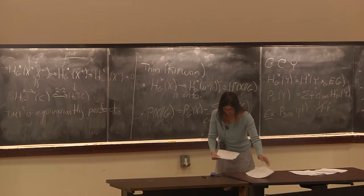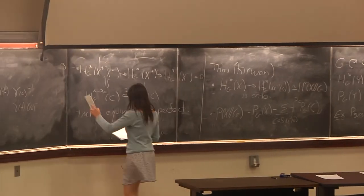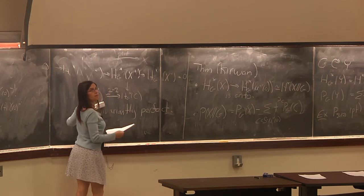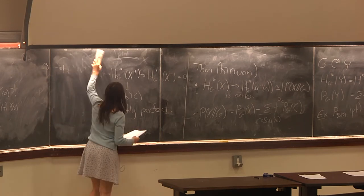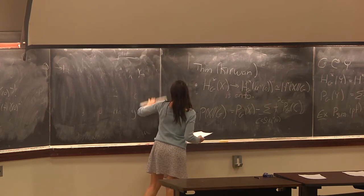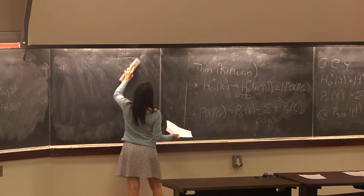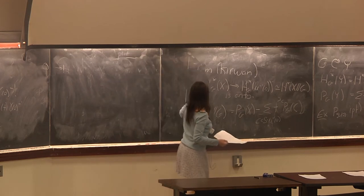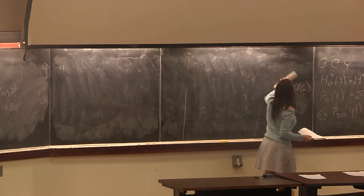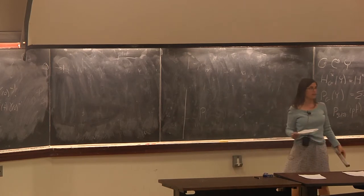That was the little bit I needed about loop groups. Once I have loop groups, I can talk about what I mean by extending what I had before. I had Hamiltonian actions — a compact group acting on a finite dimensional symplectic manifold — and now I want to extend this to a loop group action on an infinite dimensional symplectic manifold.